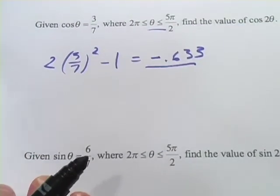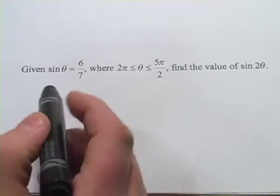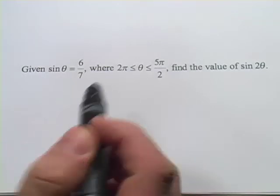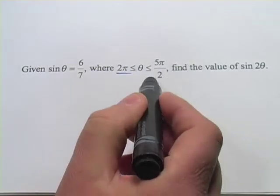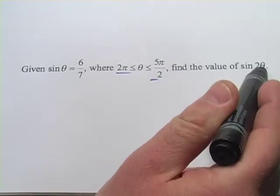Let's try another. So this one says we have the sine of theta is 6/7. And we're between 2π and 5π/2, find the value of the sine of 2 theta.